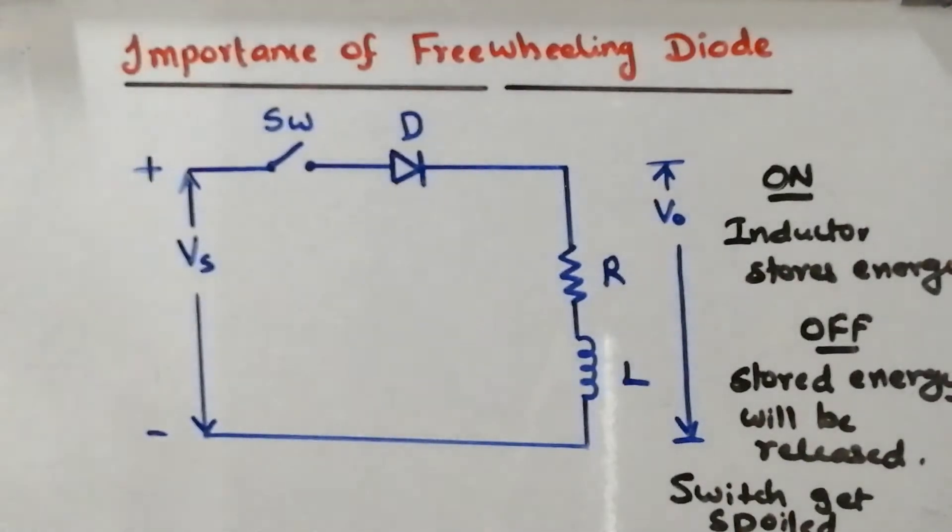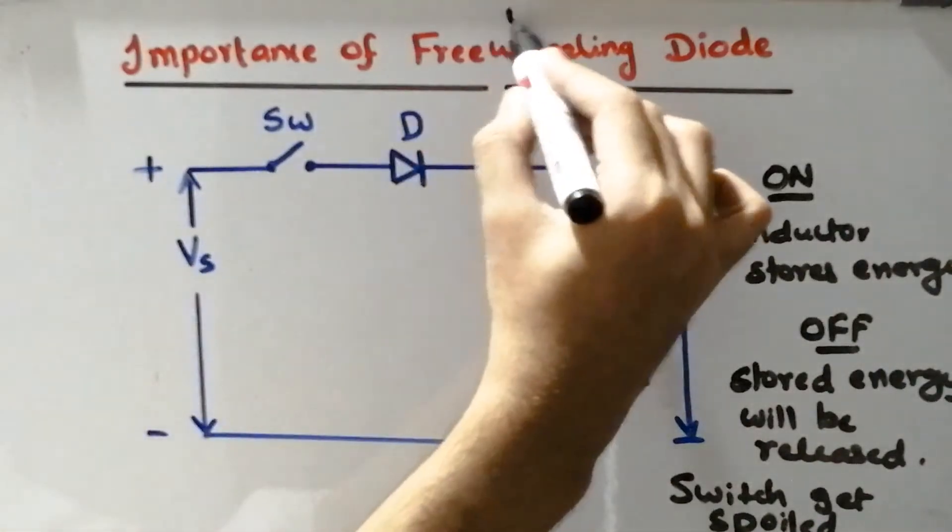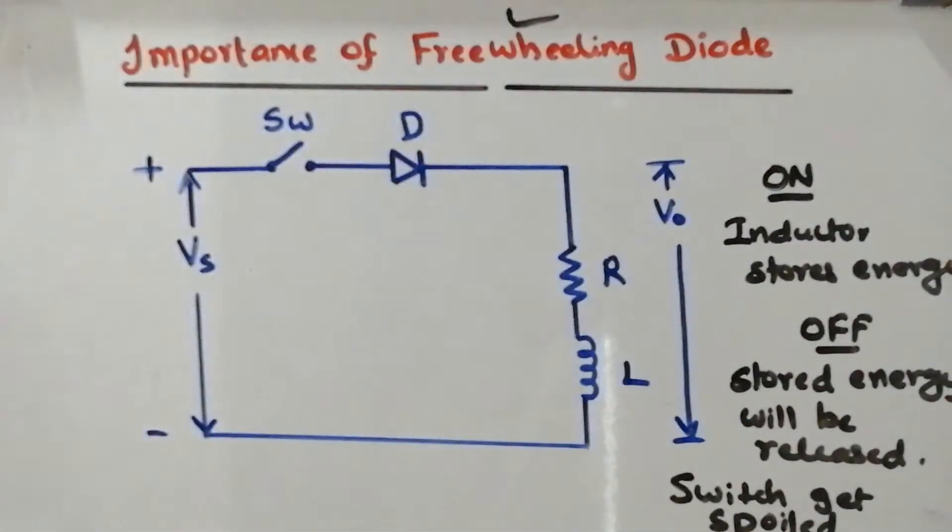How to overcome this problem? These are the major problems which are facing in power electronic circuits. There is a solution that is called freewheeling diode. By using the freewheeling diode you can overcome this difficulty. Let us see how we can do this.